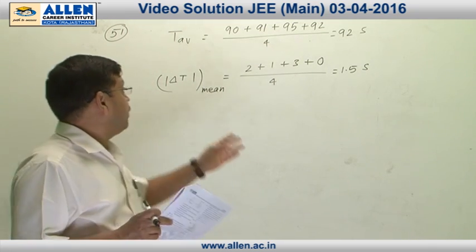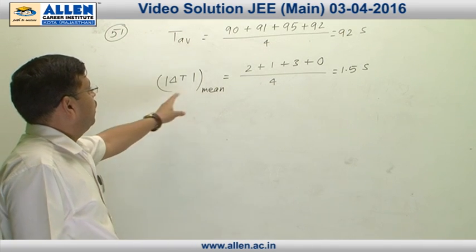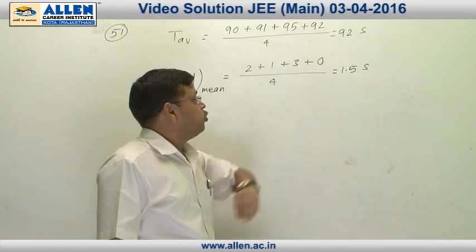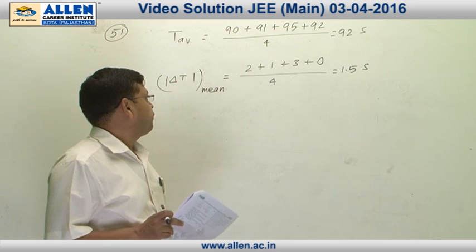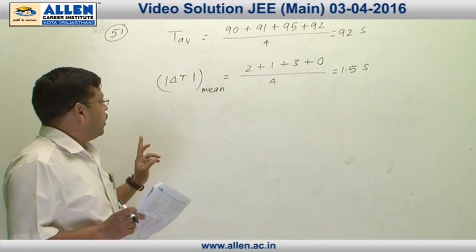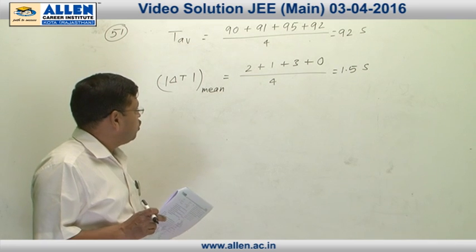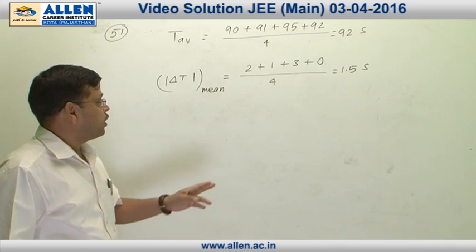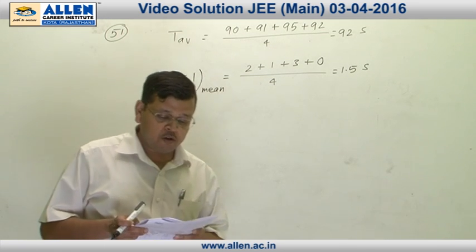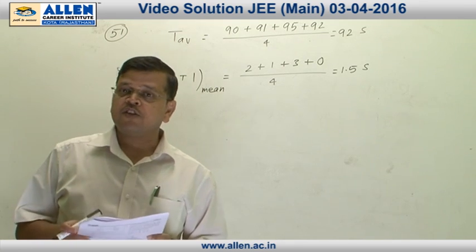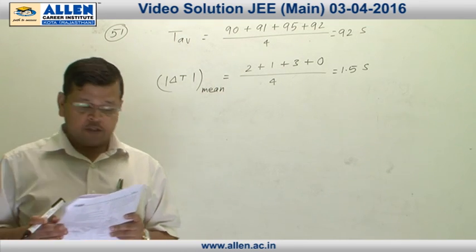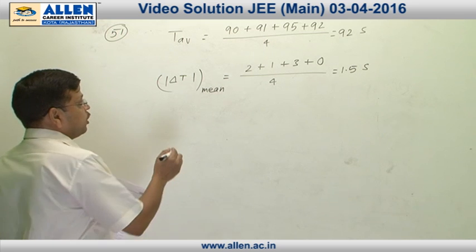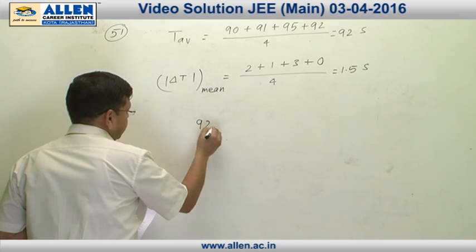From these data we can easily obtain that the average of all these is going to be equal to 92 seconds. We can also calculate that the average of absolute errors' magnitude is going to be 1.5 seconds. Since digit 2 in 92 is uncertain, the reported value is going to be 92 seconds plus minus 2 seconds.